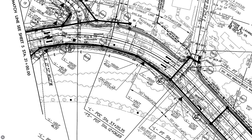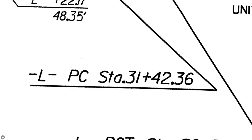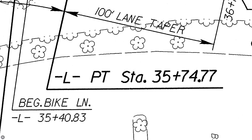Here is the curve we were presented information about in the table. There is a lot of other information on this sheet including property owners, existing structures, drainage, and landscaping features. The PC (point of curvature) is labeled at station 31 plus 42.36. The PT is also labeled at station 35 plus 74.77. Looking past the hydraulic and other feature lines, we can also see some cross-section information.